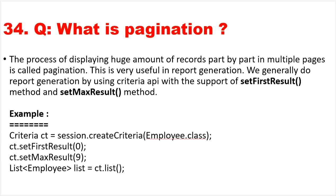The next question: what is pagination? Pagination is the process of displaying a large number of records part by part across multiple pages. It is very useful in report generation. We generally implement pagination using the Criteria API with setFirstResult() and setMaxResults(). For example, setFirstResult(0) and setMaxResults(10) will show the first 10 records on a single page.